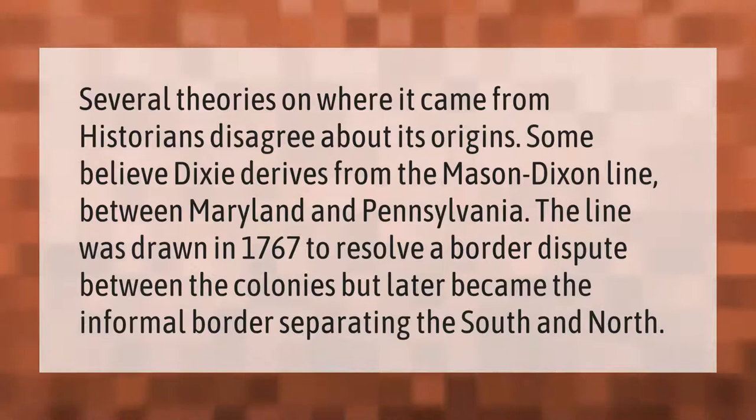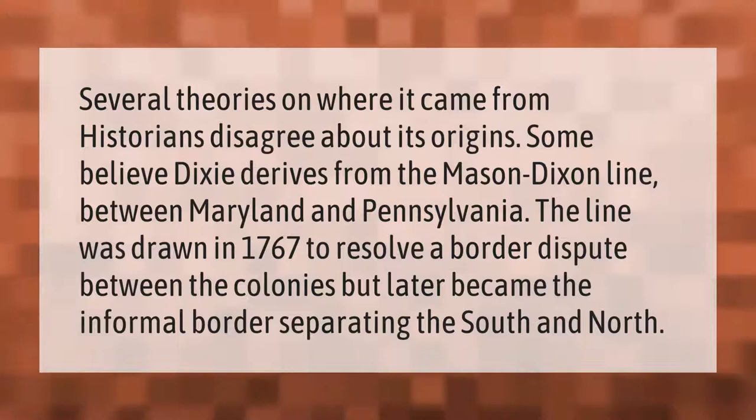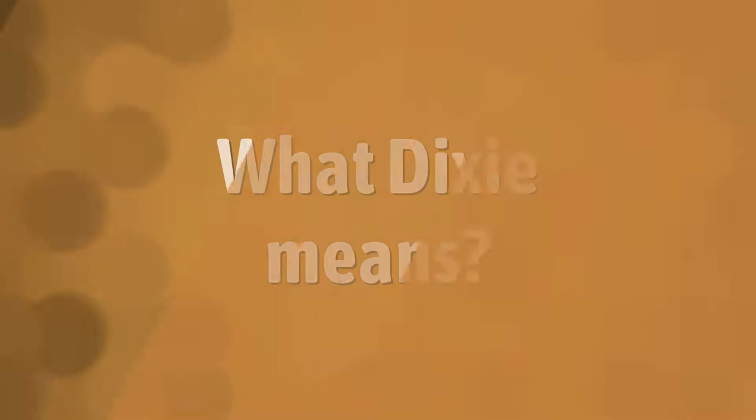Several theories exist about where the term 'Dixie' came from, and historians disagree about its origins. Some believe Dixie derives from the Mason-Dixon line between Maryland and Pennsylvania. The line was drawn in 1767 to resolve a border dispute between the colonies, but later became the informal border separating the South and North.